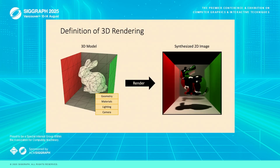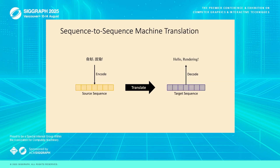Let's start with the basics. The goal of 3D rendering is to take a virtual 3D scene — everything from the objects and materials to the lights and camera — and generate an image indistinguishable from a real photograph. To understand our approach, let's look at a helpful analogy: how transformers handle machine translation. This process starts by encoding a sentence from the source language into a sequence of tokens. The transformer model then translates these tokens into a new sequence for the target language, which is decoded to form the final sentence. This entire framework is known as sequence-to-sequence transformation.